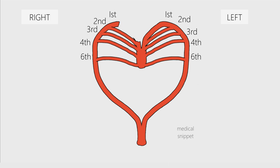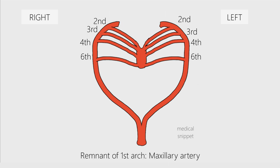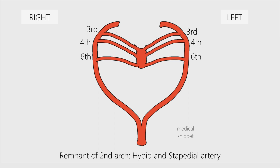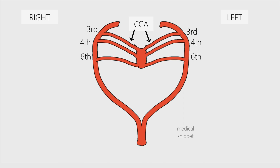The first arch disappears, but a small portion persists to form the maxillary artery. The second arch disappears and the remaining portion forms the hyoid and stapedial arteries. The third arch forms the common carotid arteries and the proximal part of the internal carotid arteries.